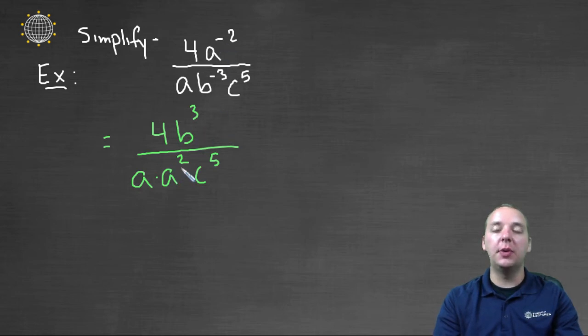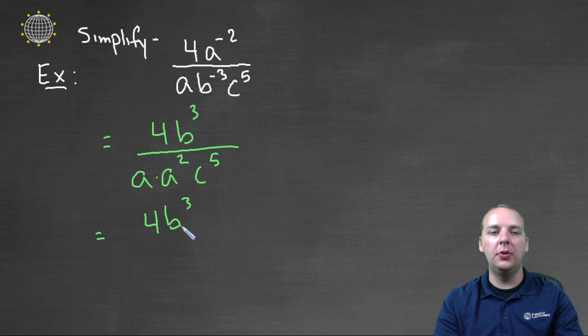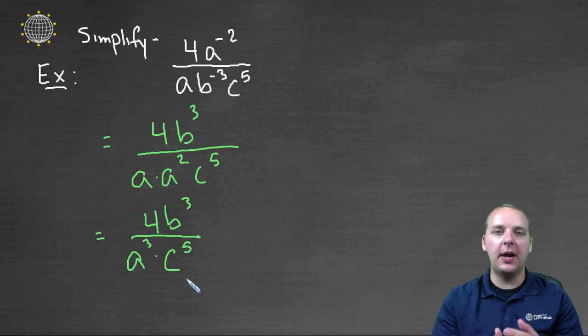So notice in my new expression, I have no more negative exponents, that's a great thing. Now let me just clean up the rest of it. We'd have four b cubed divided by a times a squared, that would be a to the third, times c to the fifth. So nothing else can be simplified, and I no longer have any negative exponents.